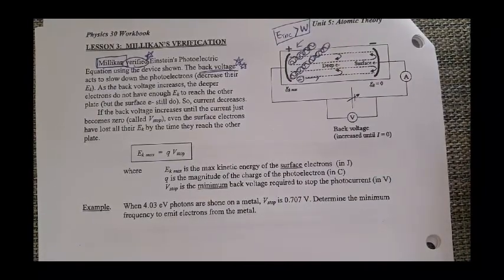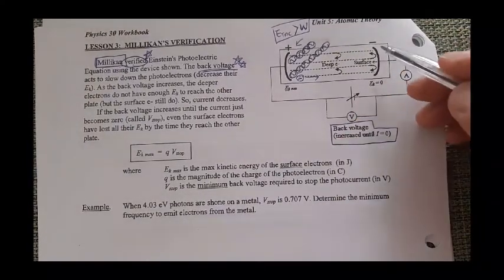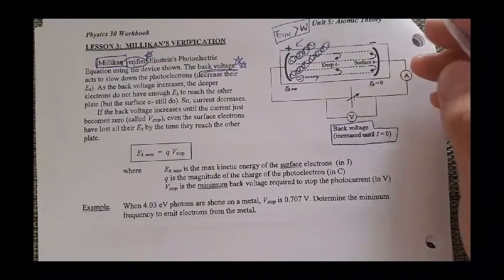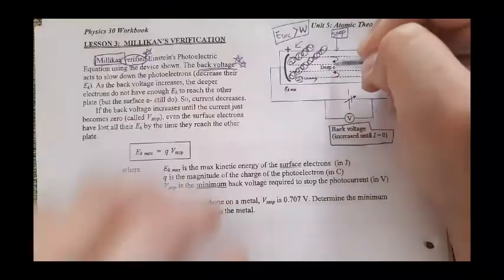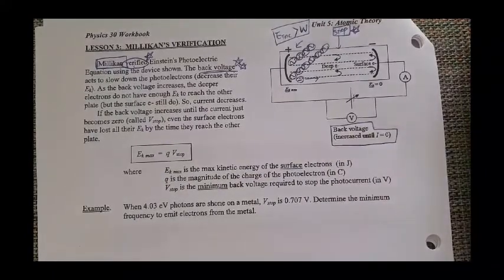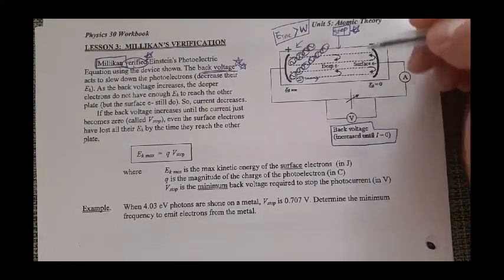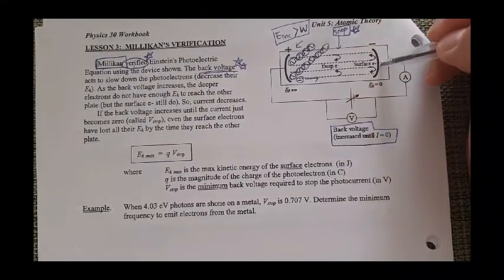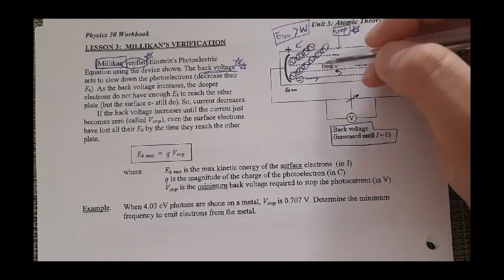However, what Millikan did was, he applied back voltage. Back voltage. That means, apply the reverse flow of polarity. Then what's going to happen is, electron will eventually stop and drop back to the cathode. This stop is important because we're going to refer this as a stopping voltage. And he found that as the back voltage increases, the electron does not have enough kinetic energy to reach to the opposite side of the plate. And if you increase more and more, electron will eventually stop and drop back.